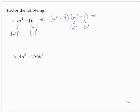And so I can write that as m squared plus 4, and then the m squared minus 4, I'll use a different color here to distinguish it, would be m plus 2 times m minus 2.